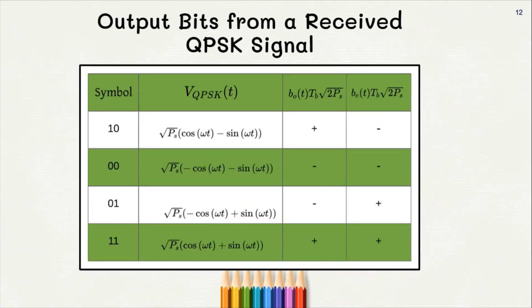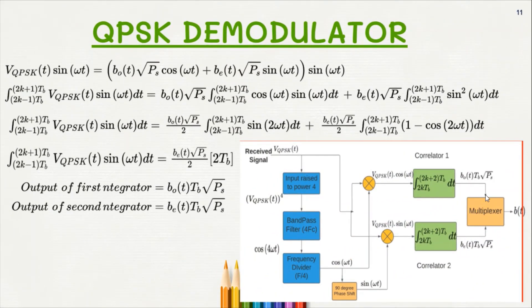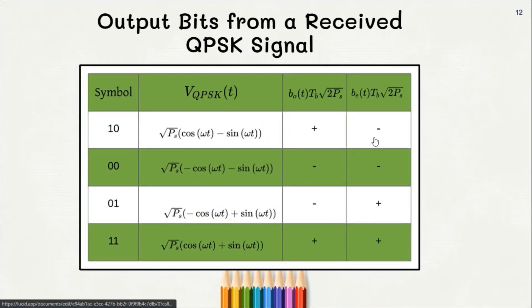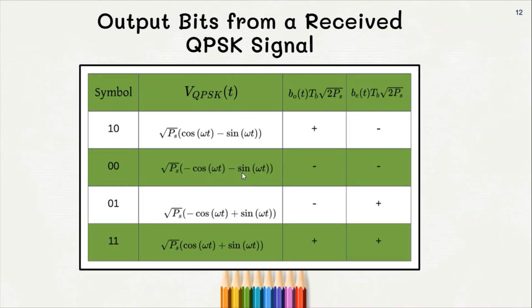This is a small chart showing what output bits will be received from the modulated QPSK signal. If the symbol is 10, the odd bit multiplied by the cos(ωt) term will be positive and the even bit multiplied by sin(ωt) will be negative. Hence the output received from the integrator, B0(t)·√PS, will be positive and negative according to bits B0(t) and Be(t). Similarly, for symbol 00 the modulated QPSK signal would have −cos(ωt) and −sin(ωt), giving negative and negative output bits. Similarly for the other symbols.